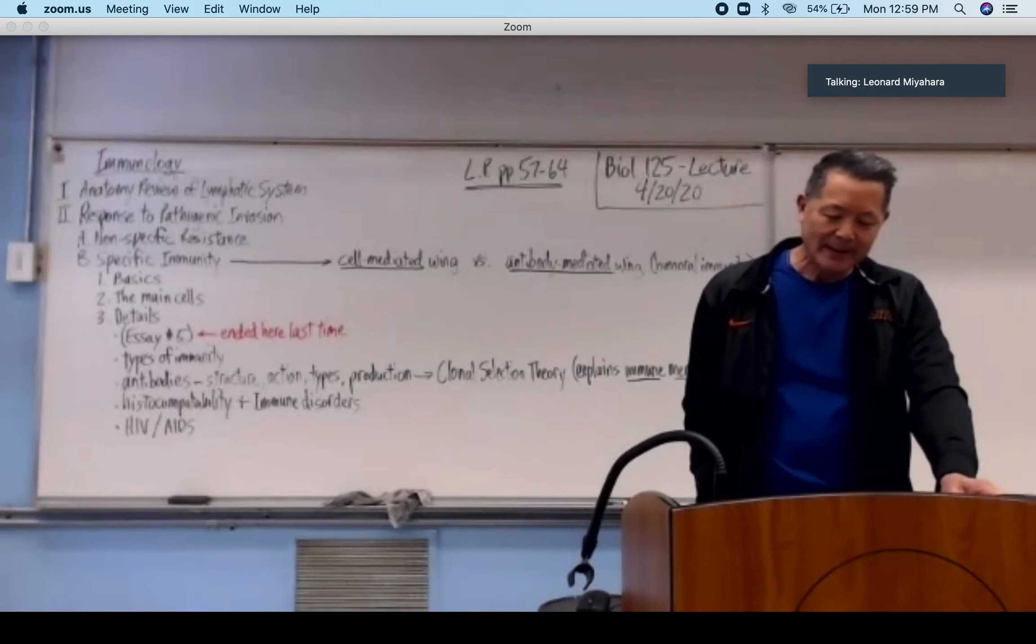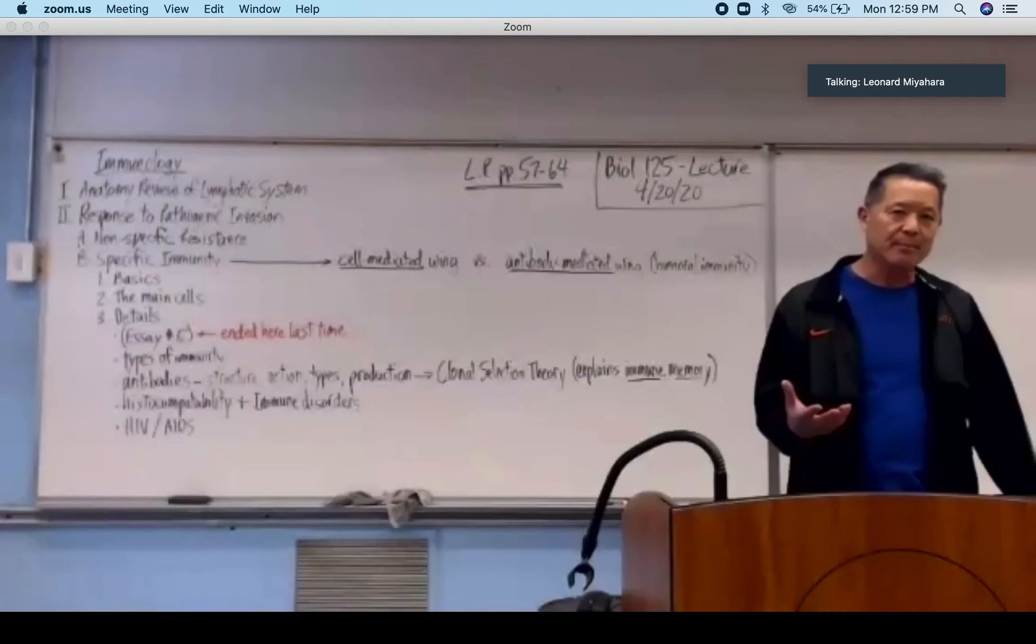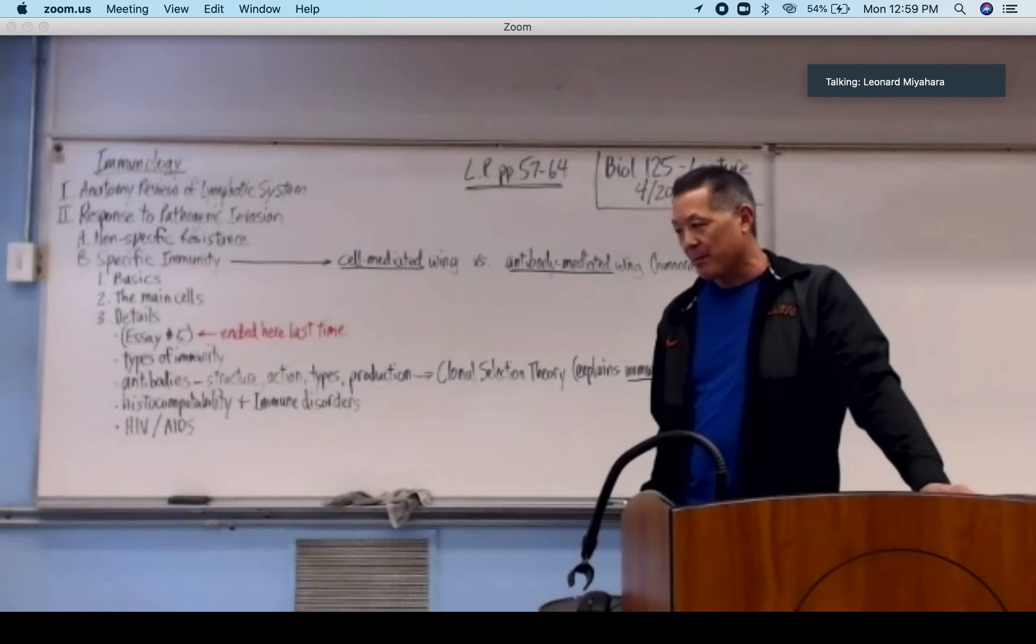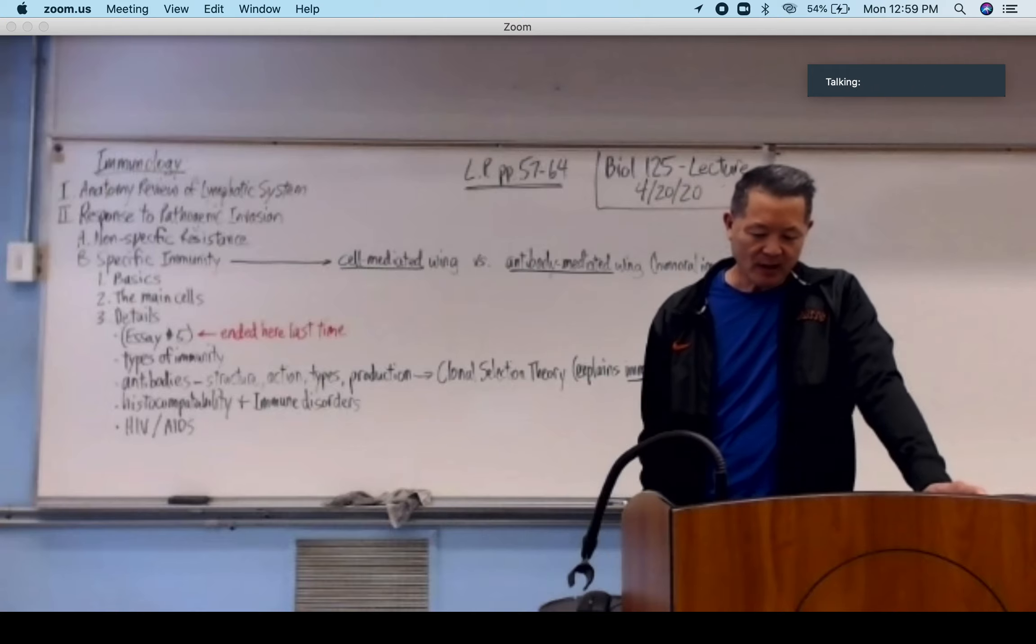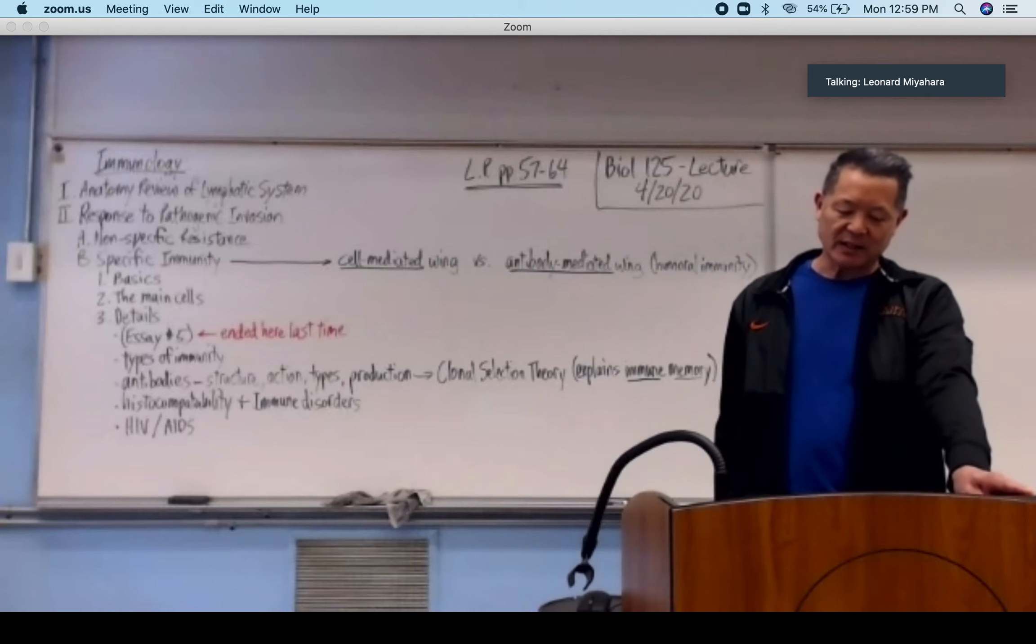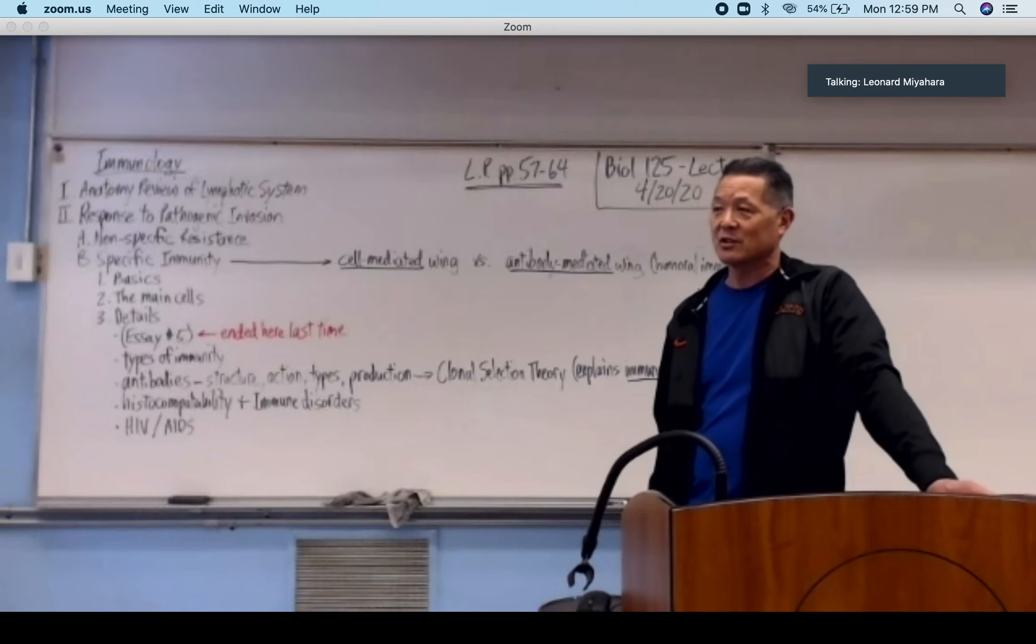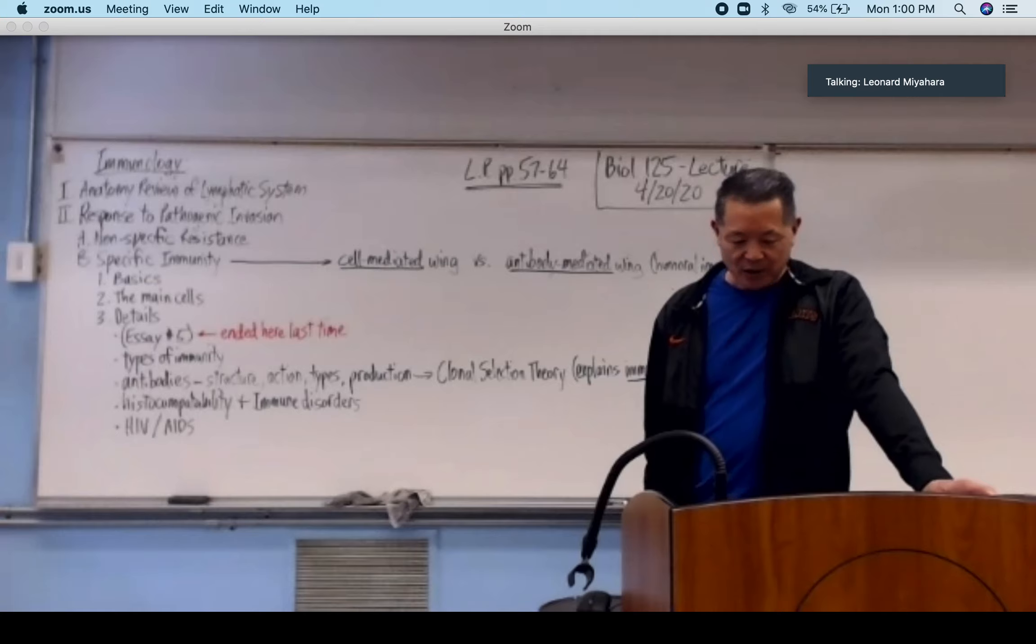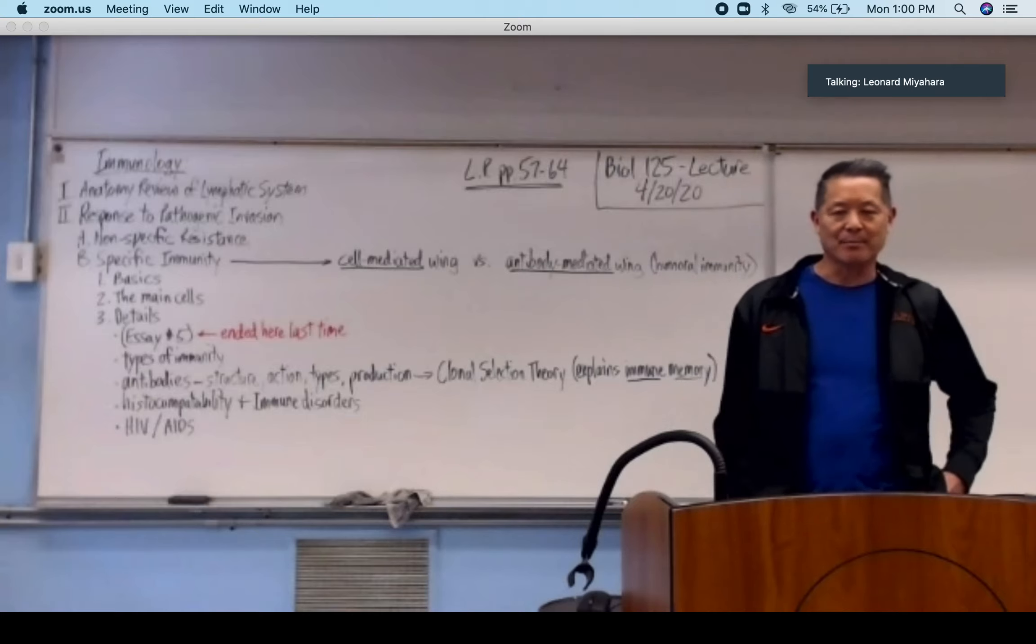Slide three is a typical antibody monomer, single antibody. It looks like a capital Y. It's actually made up of four protein chains. Two are short and they call those light chains. Two are long, those are called heavy chains. These chains are held together by disulfide bonds which are covalent bonds with two sulfur atoms. They're pretty stable.